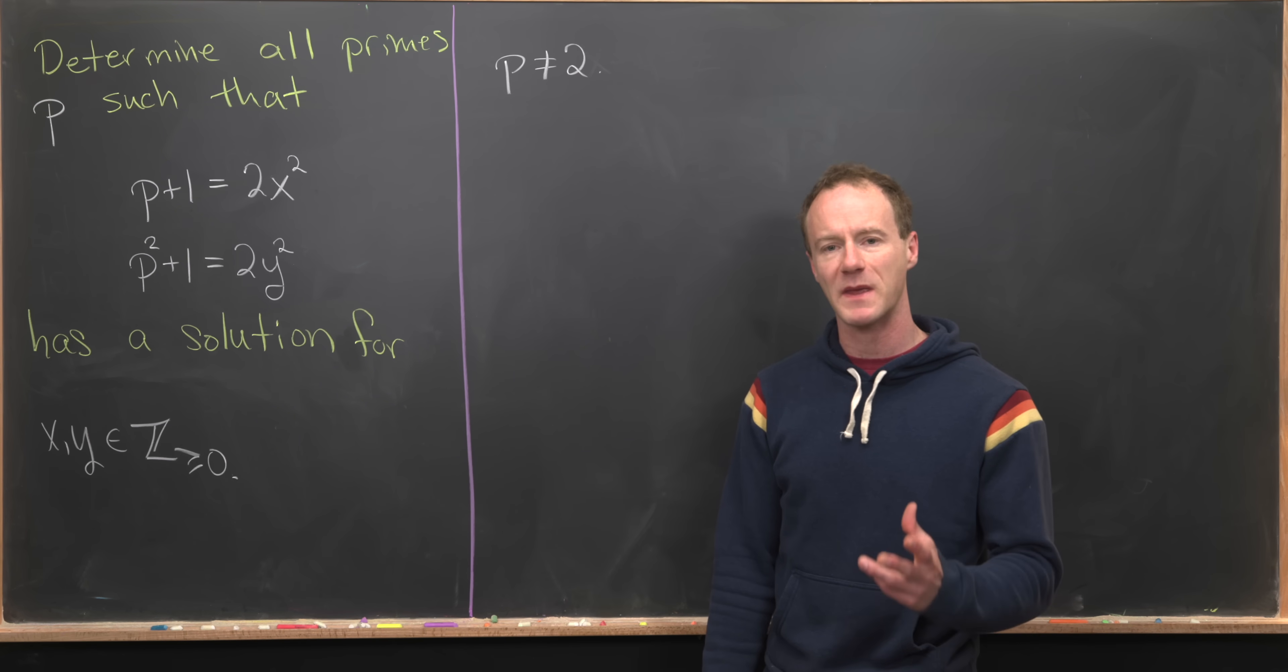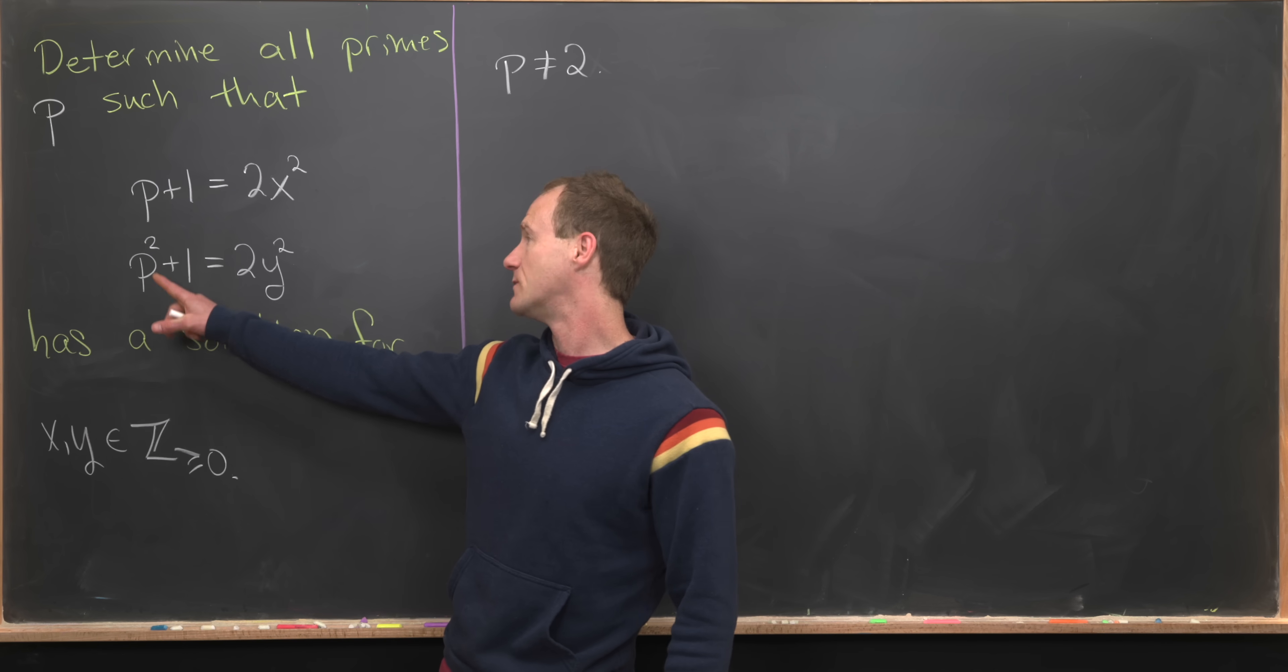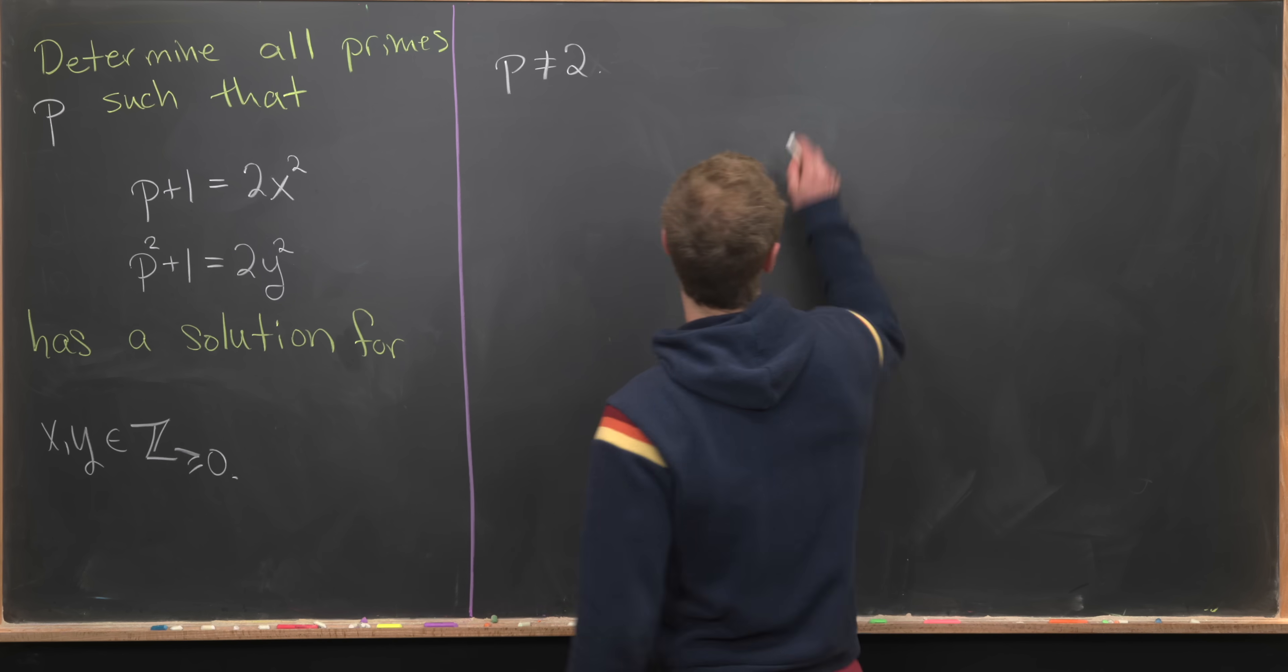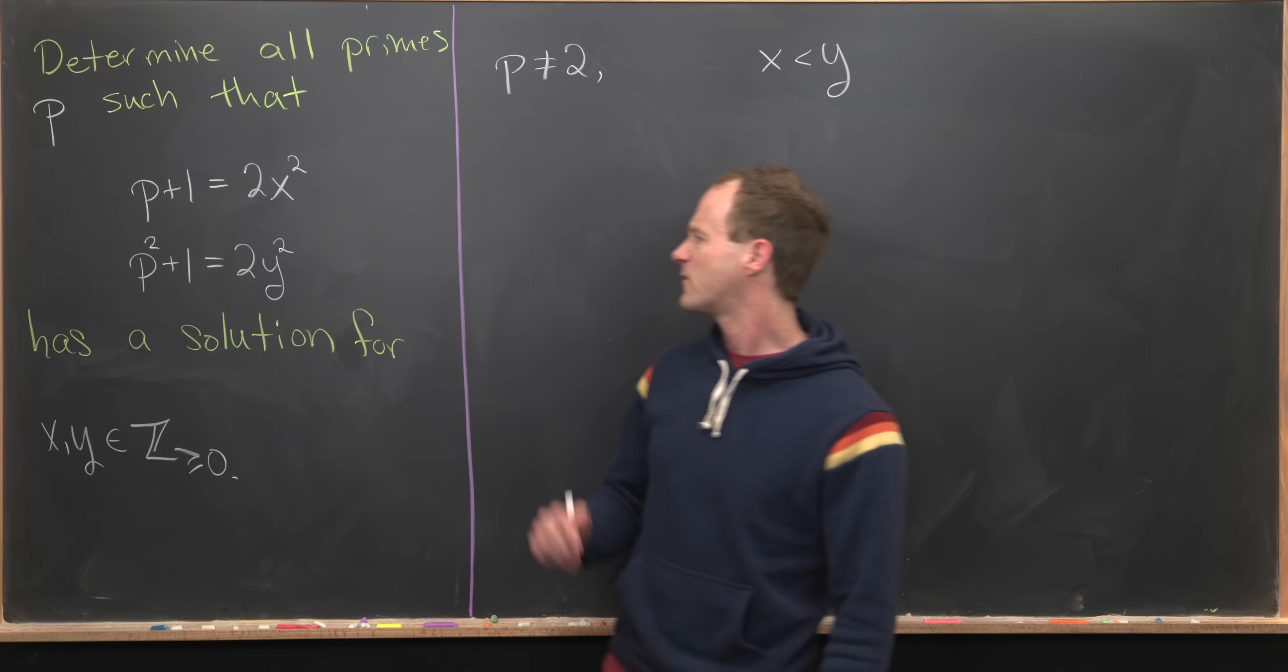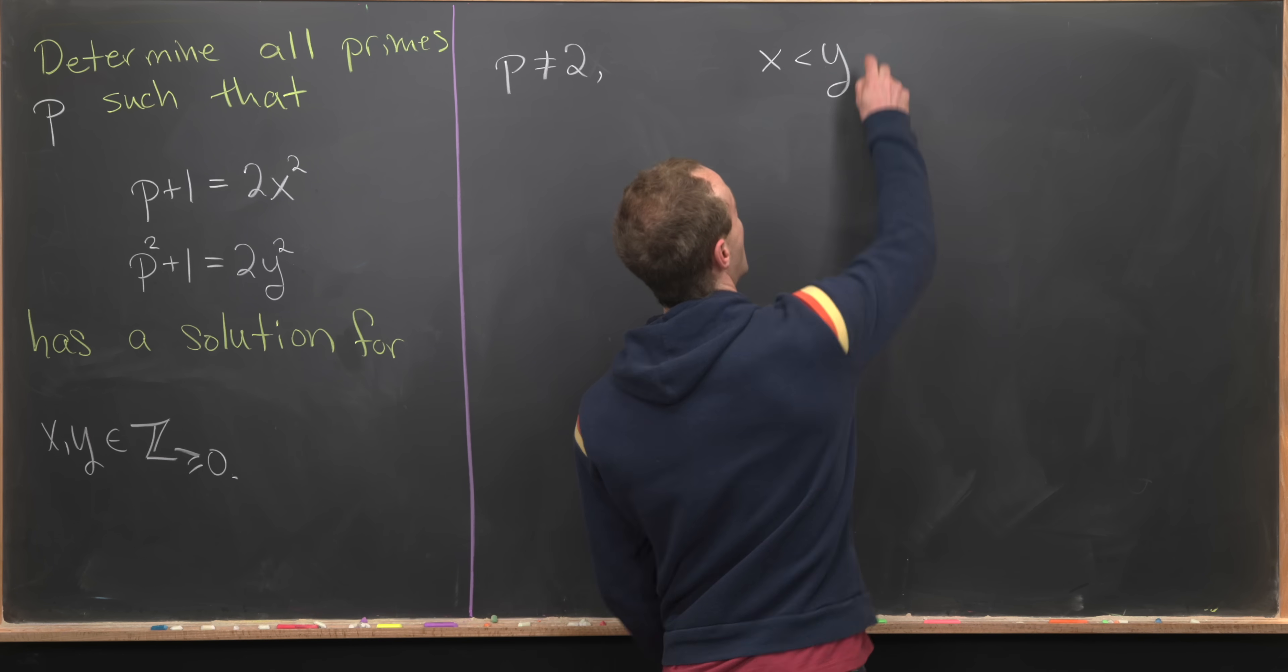Before we get started with calculations, I want to make one more observation regarding the ordering of x, y, and p. Notice that p²+1 is definitely bigger than p+1, which means y is definitely bigger than x. Furthermore, by this equation, we see that p must be bigger than y.